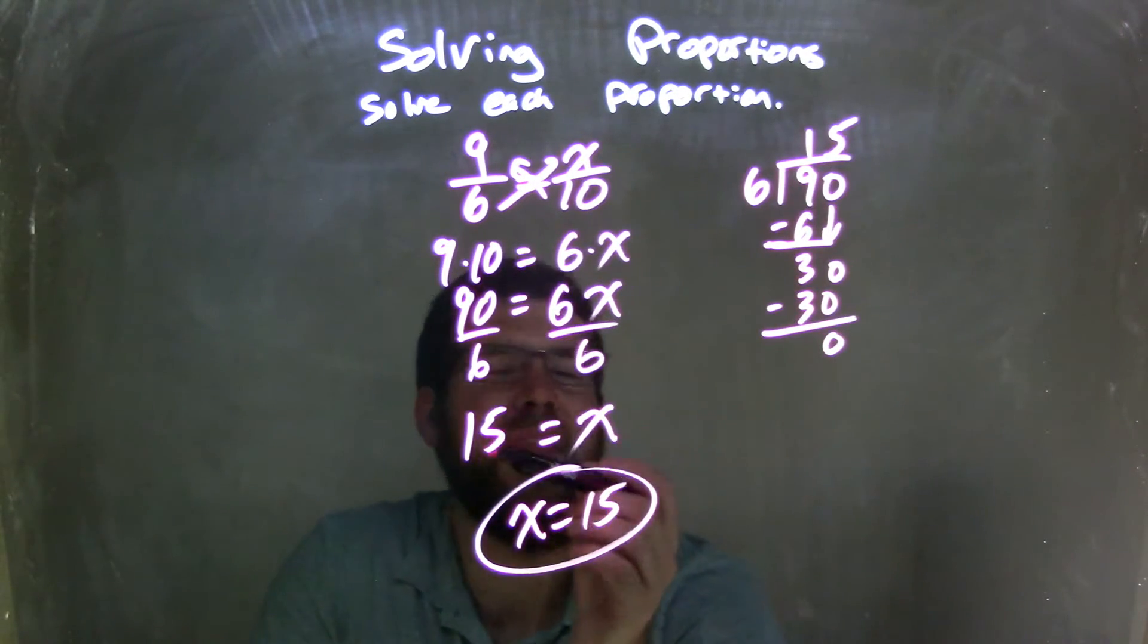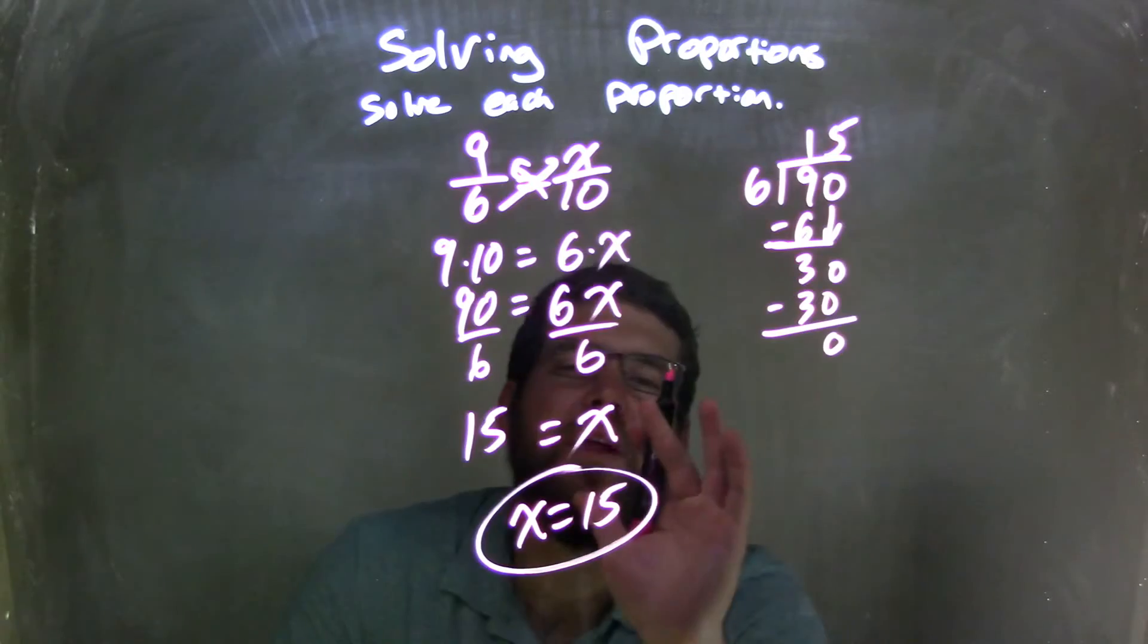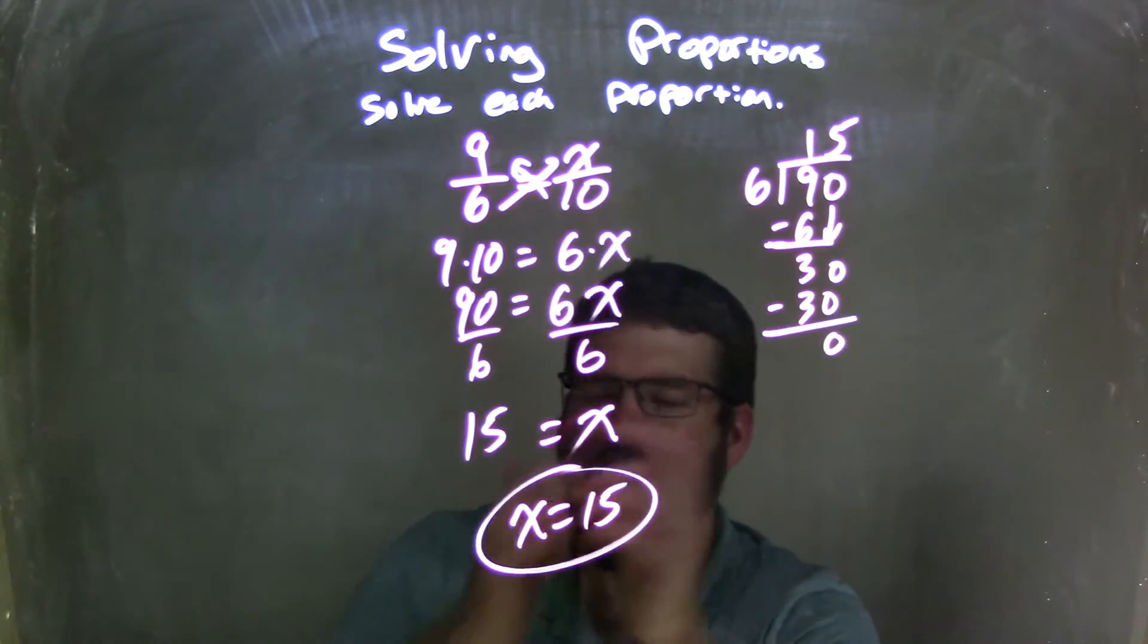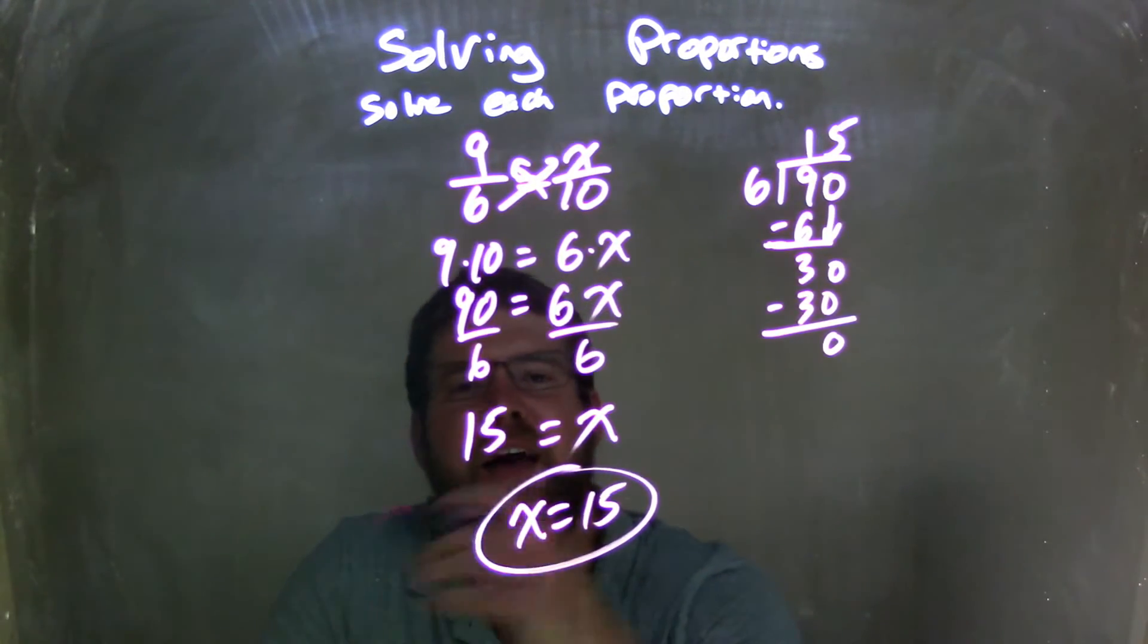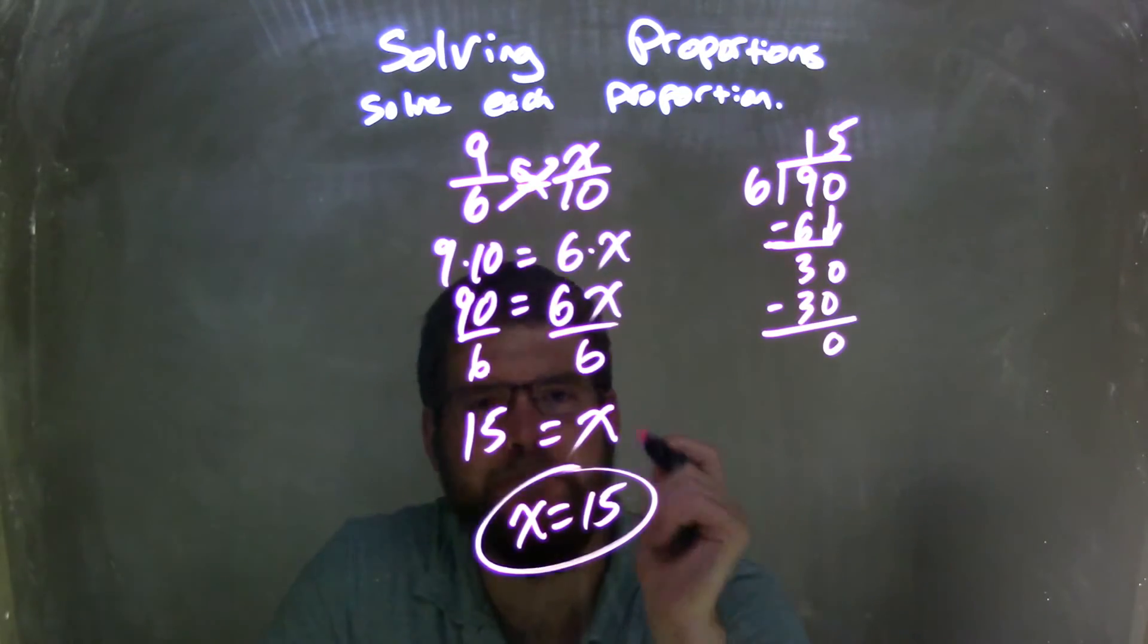15 is our answer. That's what we're looking for. 15 equals x. Let's rewrite that where x comes first. And so our final answer here is x equals 15. Thank you.